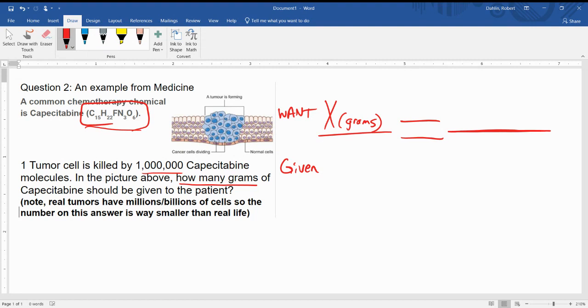We first need to know something about our molecule. For the given, it says one tumor cell is killed by one million of these molecules. In my picture, these bluish colored ones are the tumor cells, so I have to count how many tumor cells I have. Going through and counting: 1, 2, 3, 4, 5, 6, 7, 8, 9, 10, 11, 12, 13, 14, 15, 16, 17, 18, 19, 20, 21. I have 22 tumor cells. Well, 22 times a million means I have 22 million molecules. 22 million molecules.